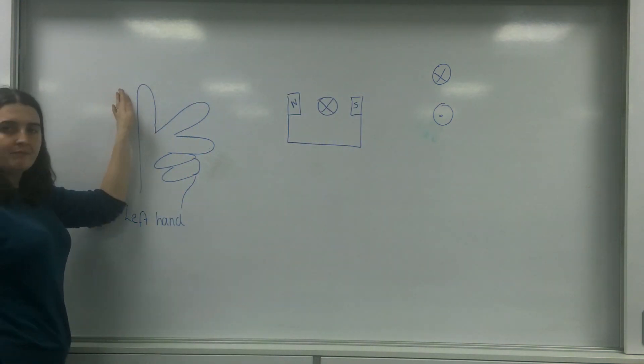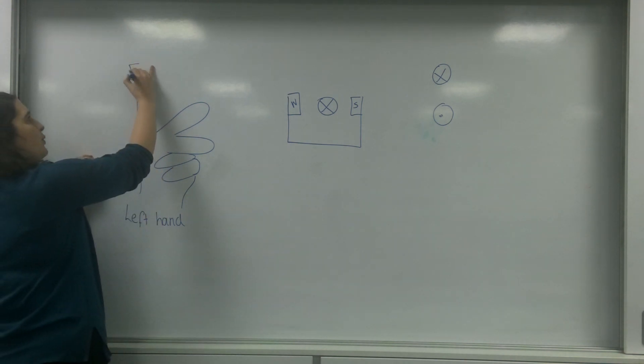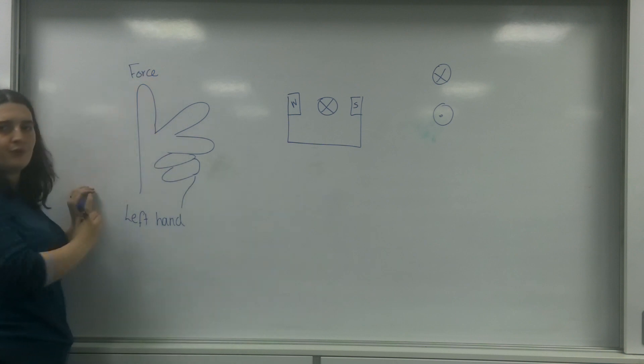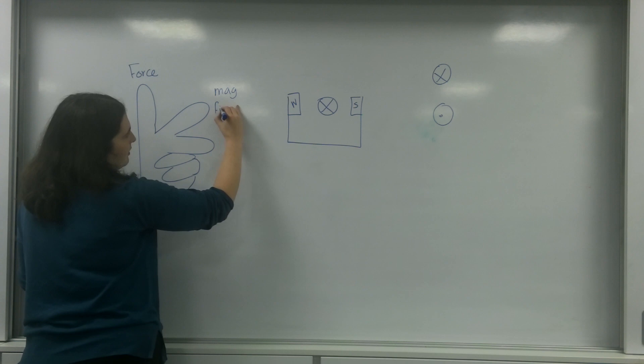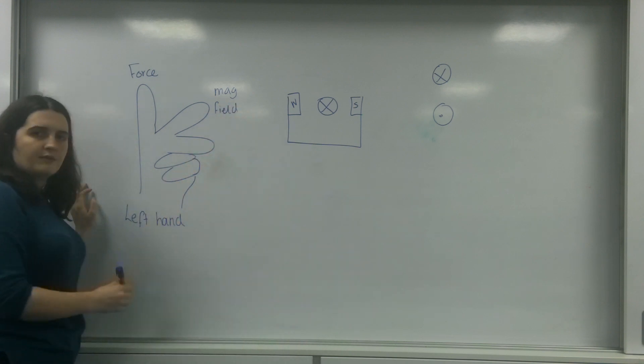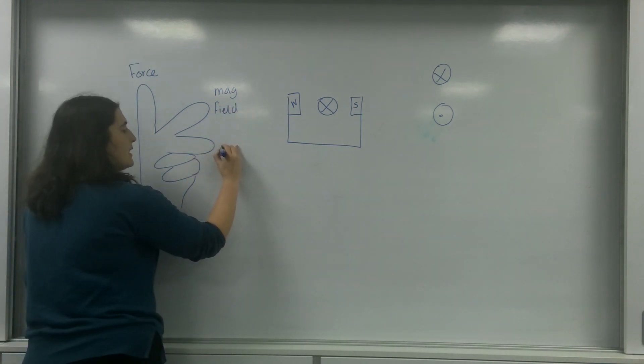So what I have here is this idea. And you may have seen this before. This is force. The thumb represents the force. The first finger represents the magnetic field. And this object here represents the electric field, or the direction of the current.